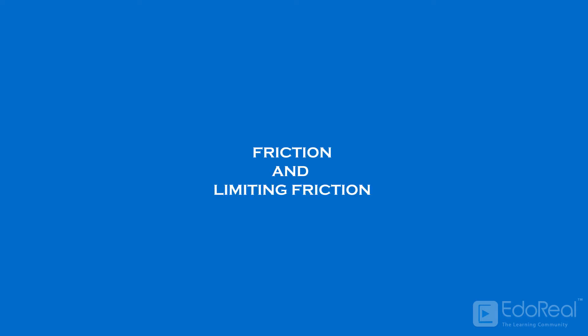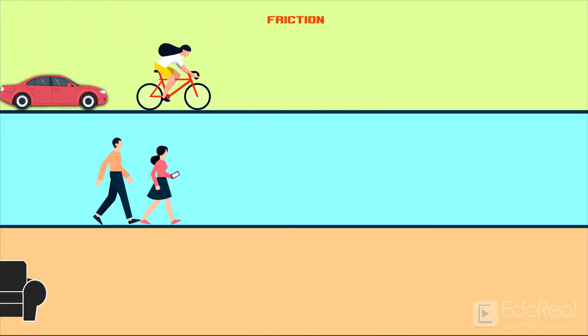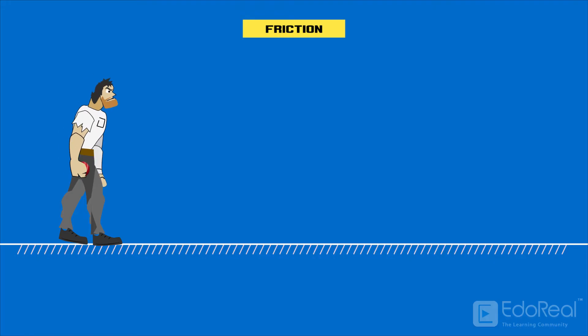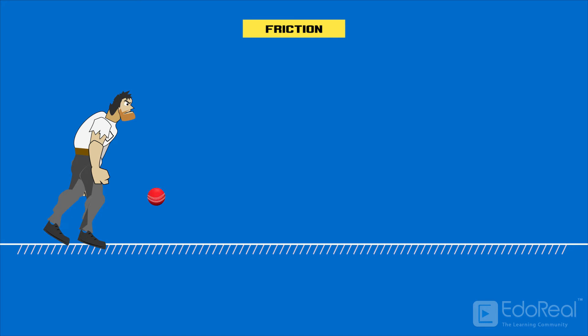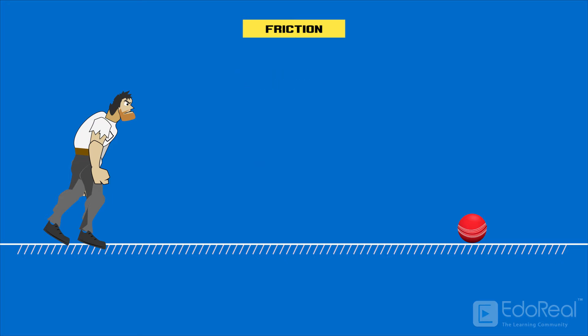In this video, we will discuss about friction and limiting friction. Let's see what is friction and how everything moves in real life. Let's imagine throwing a ball with a force. After traveling some distance, it will come to a halt. Why? This is because of friction.